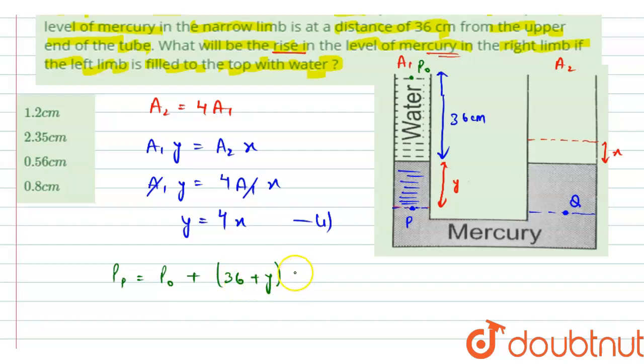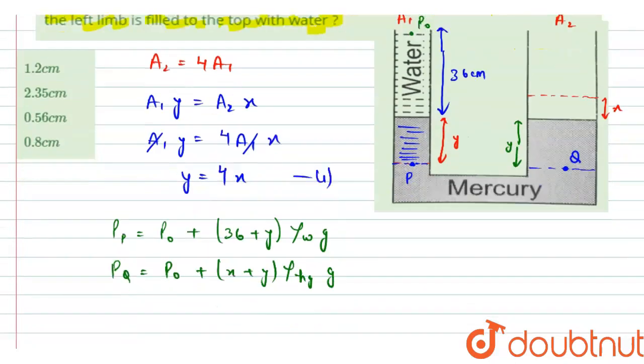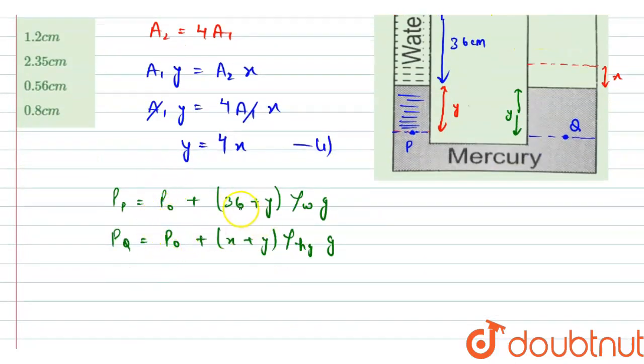This is h rho g. And for Q, we will have atmospheric pressure P0 plus this distance would be x, and this distance is y, so we will have x plus y into rho of mercury Hg into gravity g. So on equating this, P0 and P0 will be cancelled out.